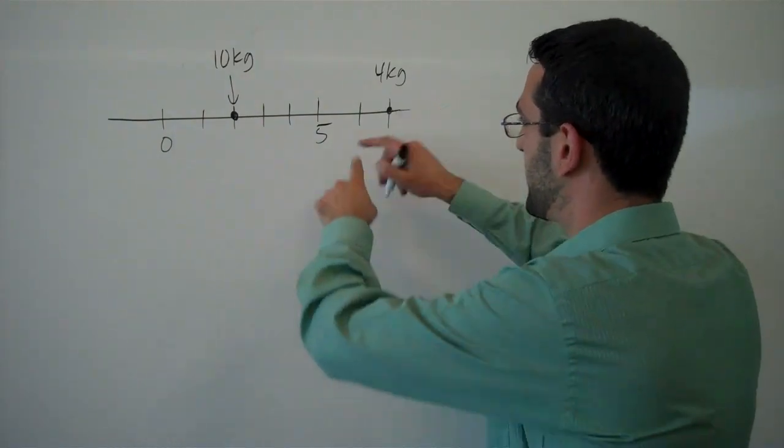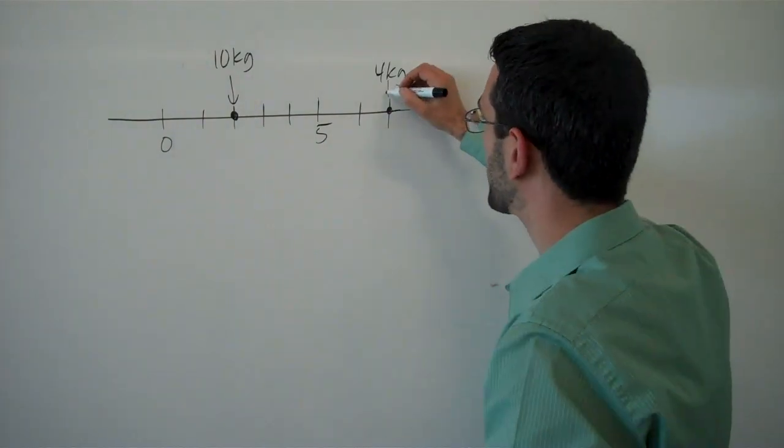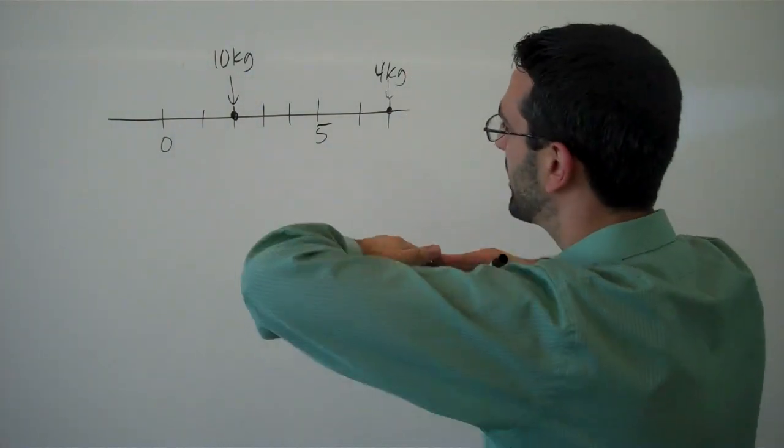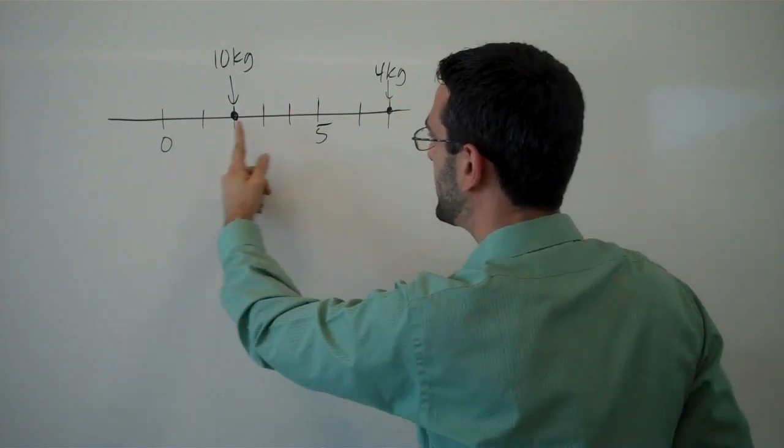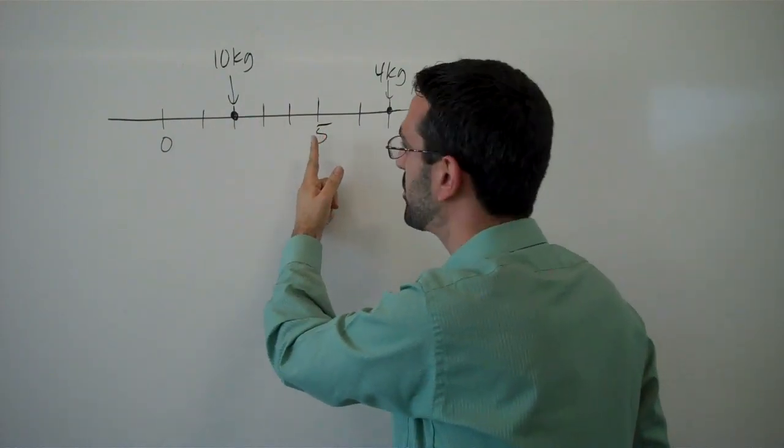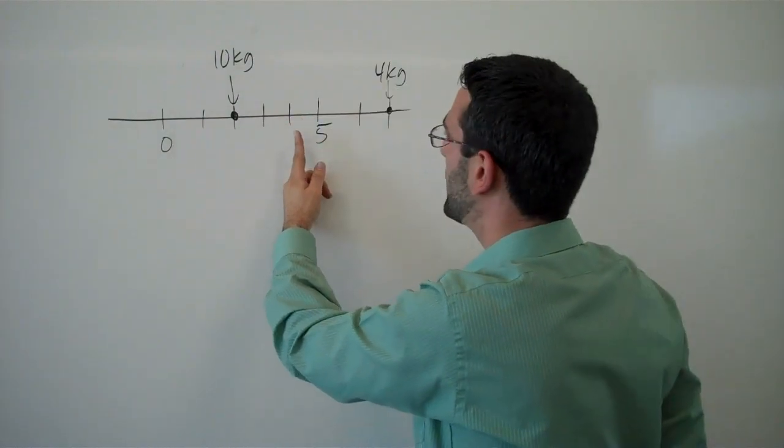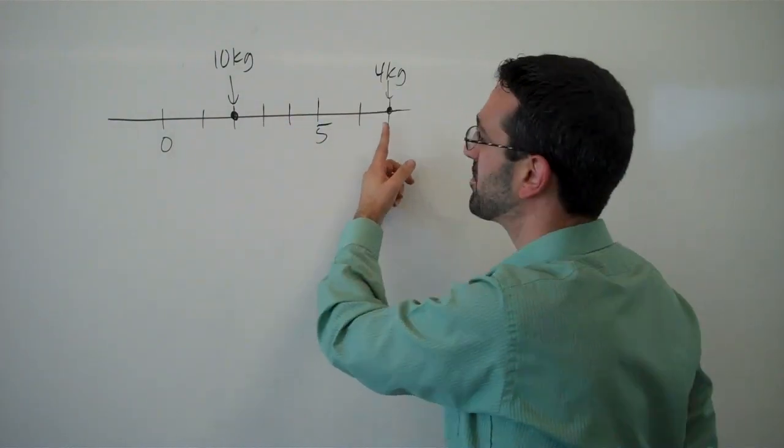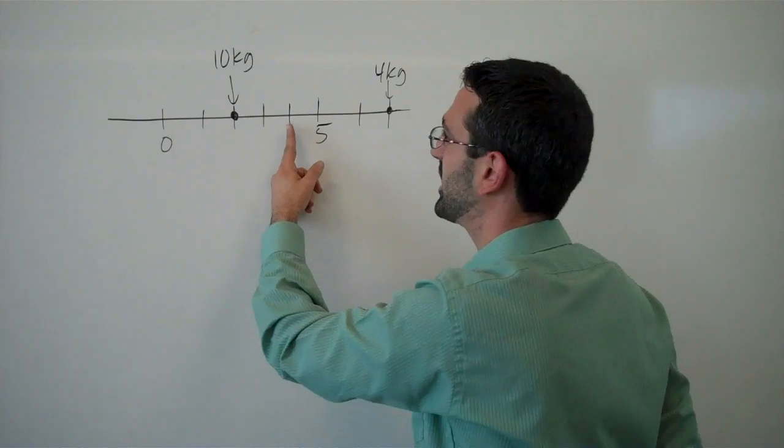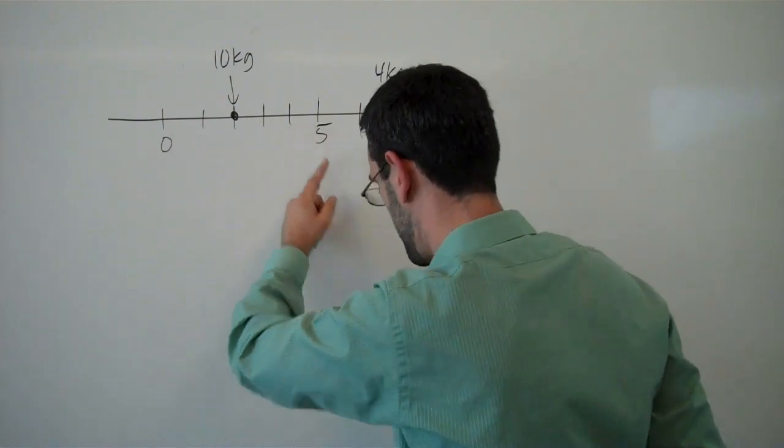If we imagine the number line like a teeter-totter, like a lever, we might ask, where would I need to put a fulcrum, where would I need to put a point in order to balance this and keep it from tipping? And your natural inclination might be, it needs to be closer to the 10 kilogram point, and you're absolutely right.